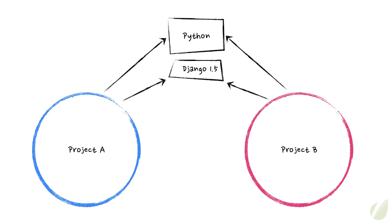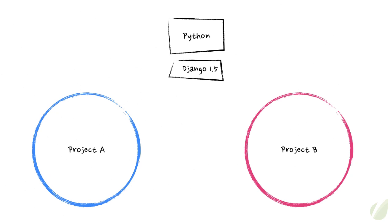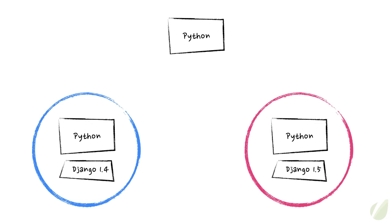Now a problem can occur when you go to run project A, now pointing to the new version of Django, and it no longer works. That's because Django 1.5 has made some backwards incompatible changes that have affected your original project. This is not a good situation to be in. What you really want to do is get rid of all the interrelated dependencies altogether. And once you've done that, why even bother having Django installed at the system level? Just keep it as clean as you possibly can. What you really want at the end of the day is for each of your projects to have its own independent Python executable, as well as a set of libraries that it depends on, so that there's no intermingling between projects.